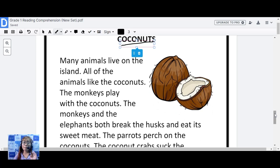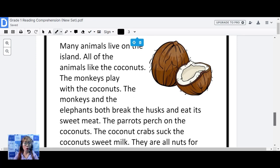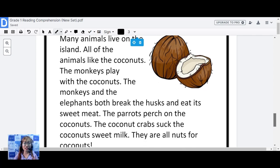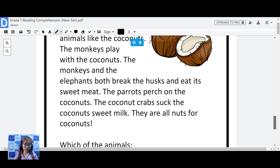Let's start. Many animals live on the island. All of the animals like the coconuts. The monkeys play with the coconuts. The monkeys and the elephants both break the husk and eat its sweet meat. The parrots perch on the coconuts. The coconut crabs suck the coconut's sweet milk.